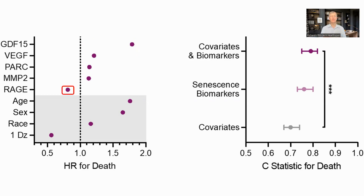One protein, RAGE, had a lower expression associated with higher mortality. They do point out that from other studies the data on RAGE is inconsistent, with some showing that higher RAGE levels are associated with higher mortality, and some showing lower.